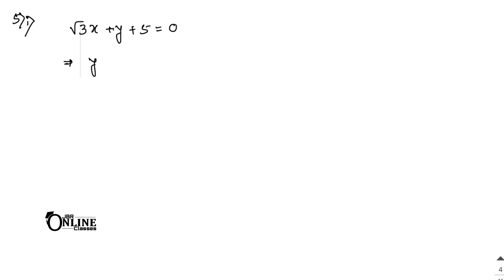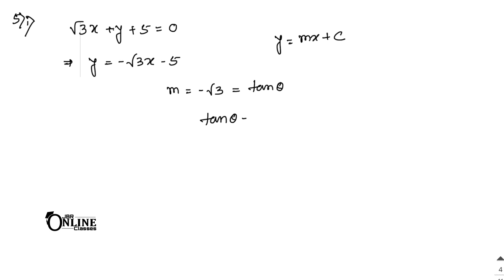Sum 5.1: Find the angle which the line √3·x + y + 5 = 0 makes with the positive direction of the x-axis. Rewrite as y = -√3·x - 5, so m = -√3. Since m = tan θ, tan θ = -√3, therefore θ = 120°.